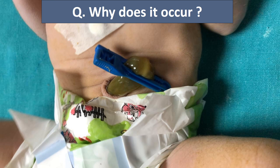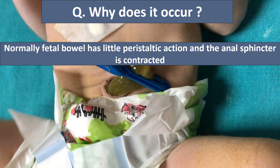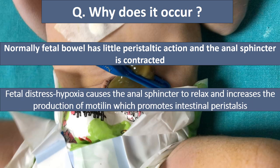Why does a baby pass meconium in utero or during delivery? Normally, the fetal bowel has little peristaltic action and the anal sphincter is contracted. But if the baby is having fetal distress, it leads to hypoxia, which causes the anal sphincter to relax and increases the production of motilin, which promotes intestinal peristalsis. Ultimately, meconium is passed in utero or during delivery, leading to the complications of meconium aspiration syndrome.